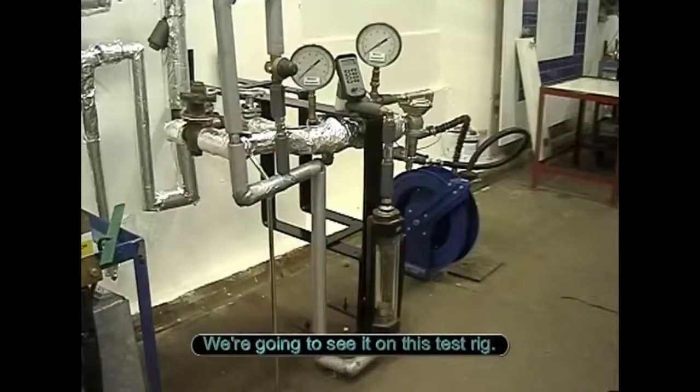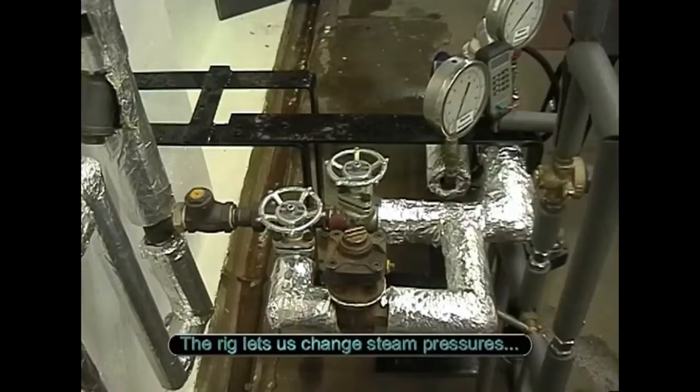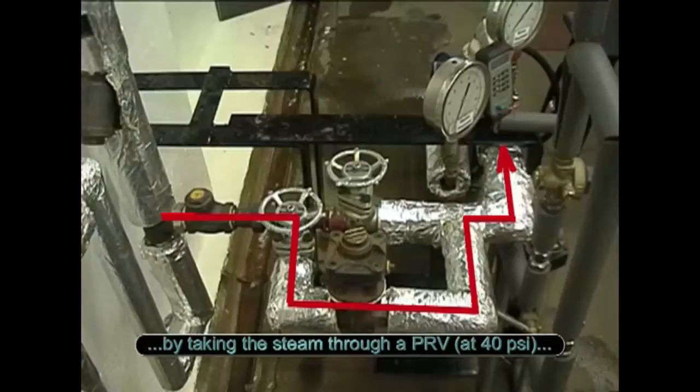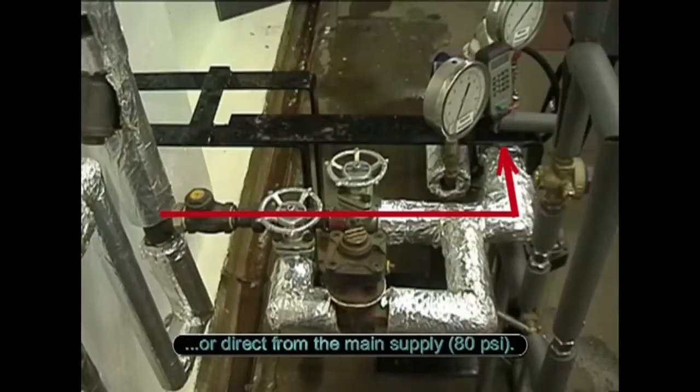We're going to see it on this test rig. The rig lets us change steam pressures by taking the steam through a PRV at 40 psi or direct from the main supply at 80 psi.